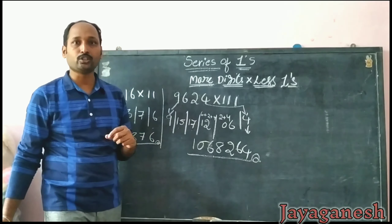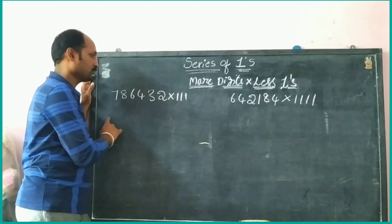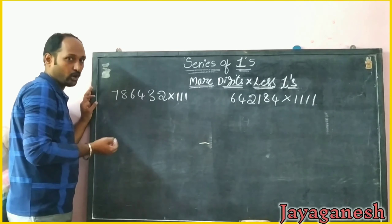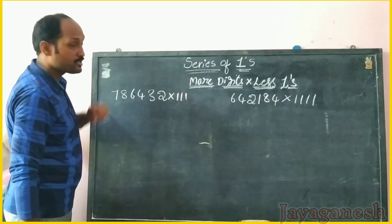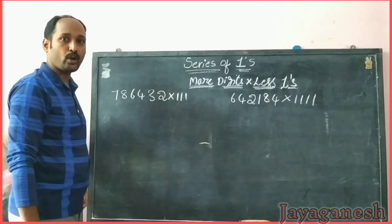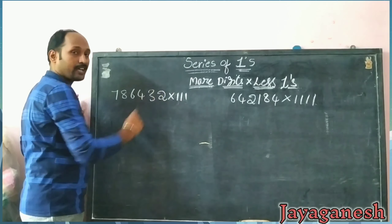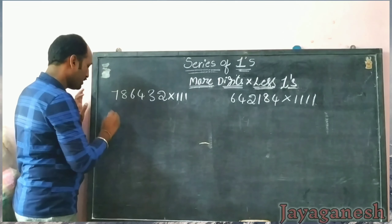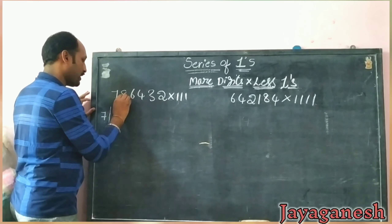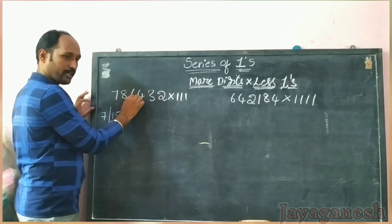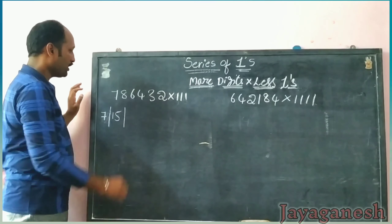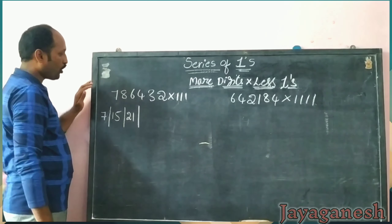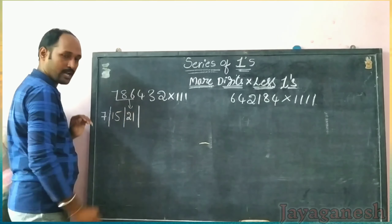One more example. I increase the digits — previously four digits, now I give six digits into 111. The process: check how many ones are there; three ones means go up to the third digit. Writing here: 7 plus 8 is 15; then 7 plus 8 plus 6 is 21. Close the first digit once three digits are added.